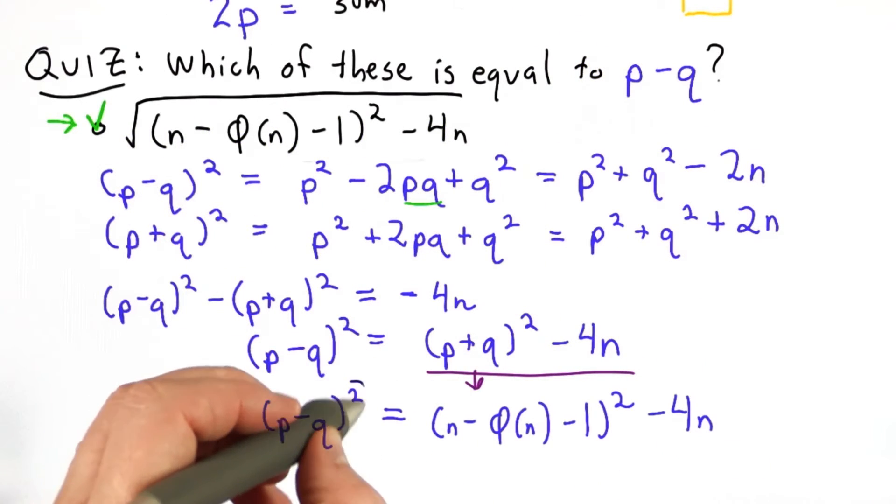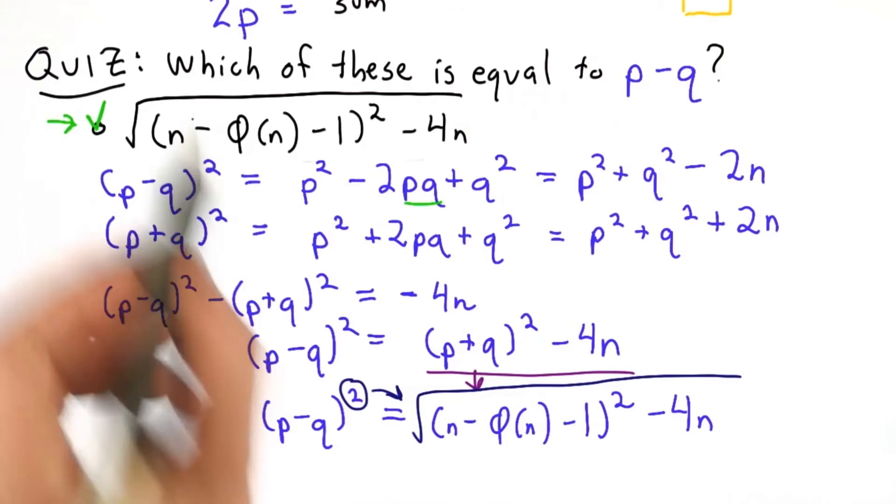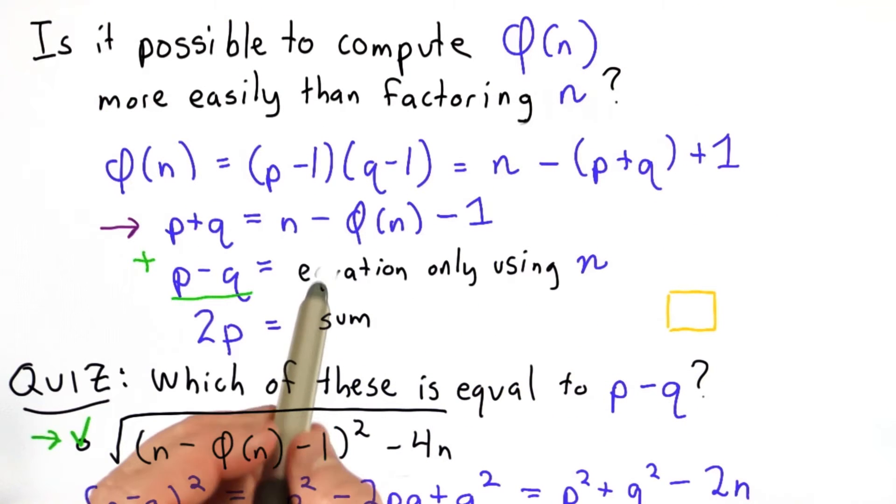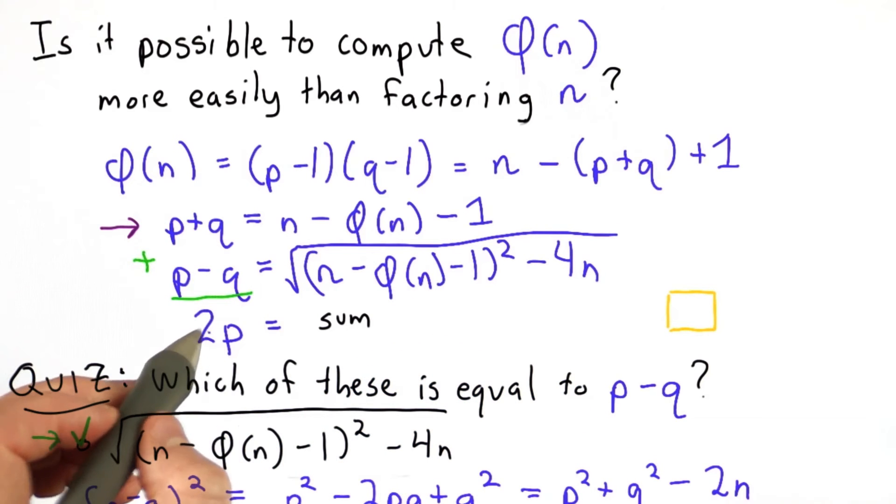Then we can just take the square root, which is how we ended up with this equation here, which was the answer to the quiz. So now we know the value of p plus q in terms of an equation only using n. And we can add these two, get the value of 2p, divide that by 2, get the value of p.